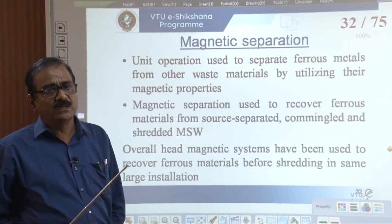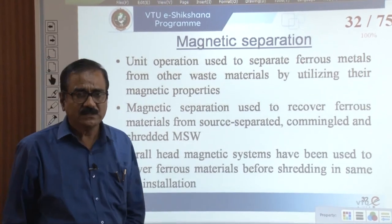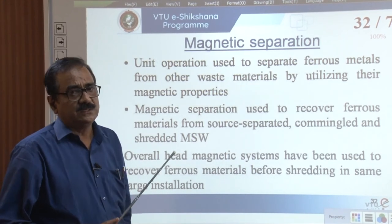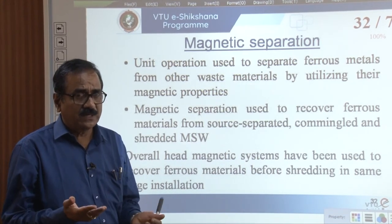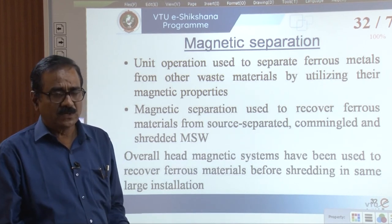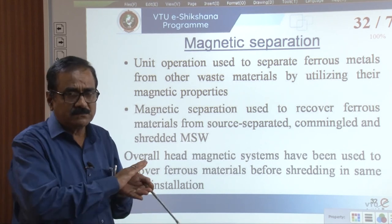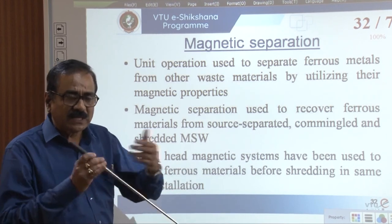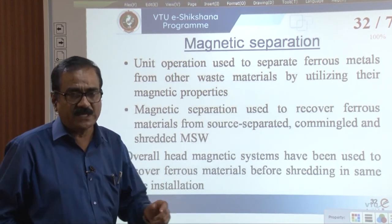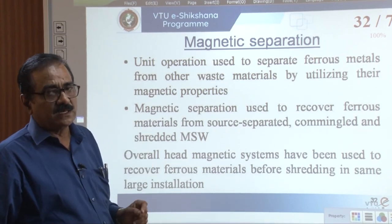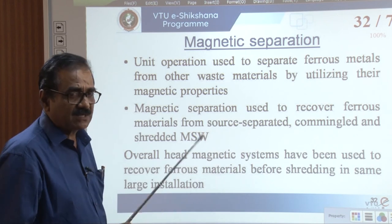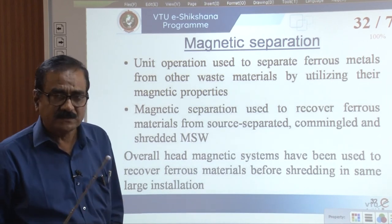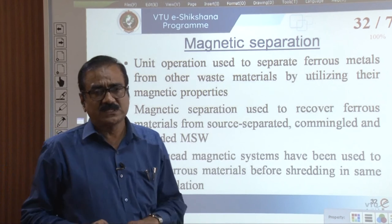Next is magnetic separation. In the previous technique — air classification — the fundamental principle was the weight difference between materials, with lighter materials escaping with the air and heavier ones settling. Similarly, magnetic separation makes use of another physical property — the magnetic property of ferrous materials. Based on that magnetic property, magnetic separation is performed.